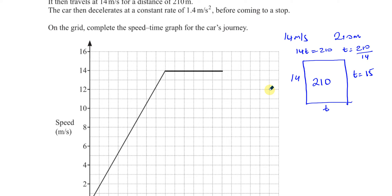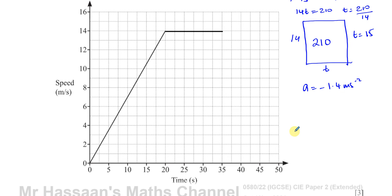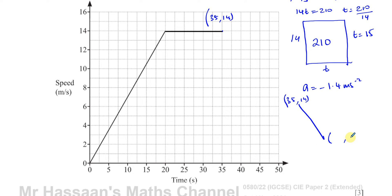Now it decelerates at a constant rate of 1.4 meters per second squared, so the acceleration is negative 1.4 m/s². The gradient of a speed-time graph represents acceleration. The corner point is at coordinates (35, 14), and the car comes to rest at speed zero at some time t. So the gradient equation is: (14 − 0) / (35 − t) = −1.4.